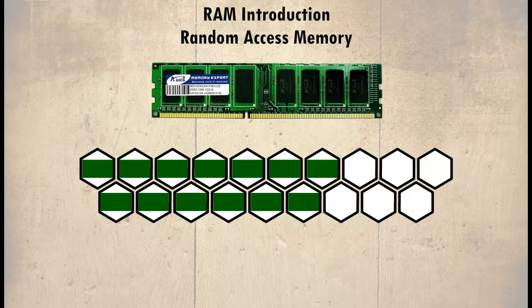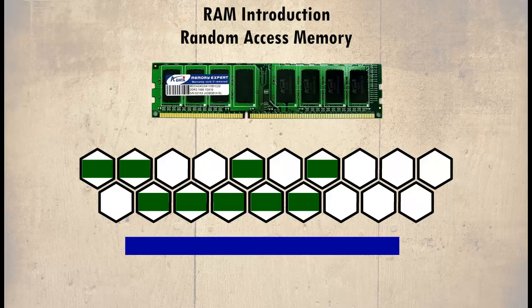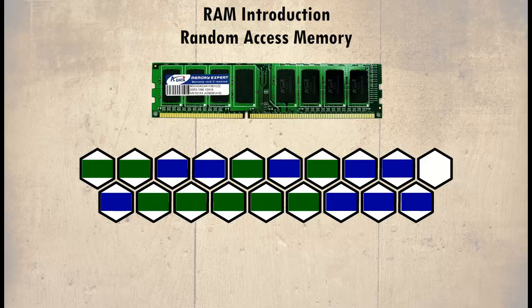Let's say this data represents a letter and that we have deleted part of it, so it is no longer taking up as much room in memory. Now we need to save further data. As we can see, this new data cannot be saved as before — instead, it has to be split up and saved randomly across the memory as shown. It would be possible to move everything to keep all the data together, but that would take time; it is much faster to record where the bits of data are and use that information when reassembling them.